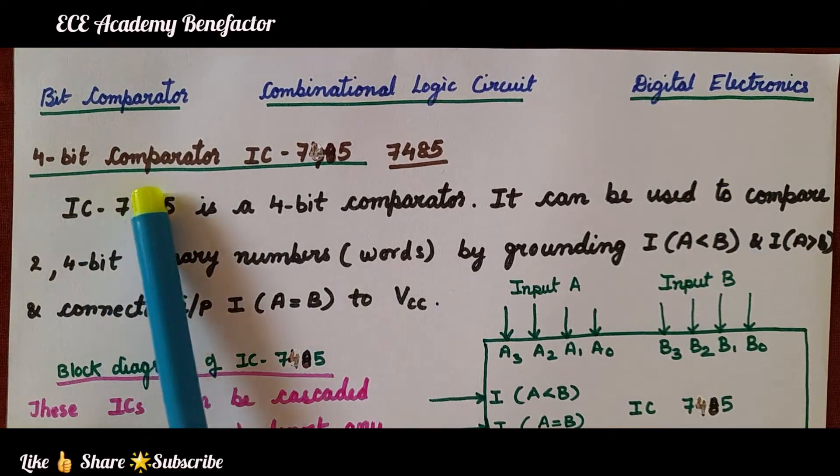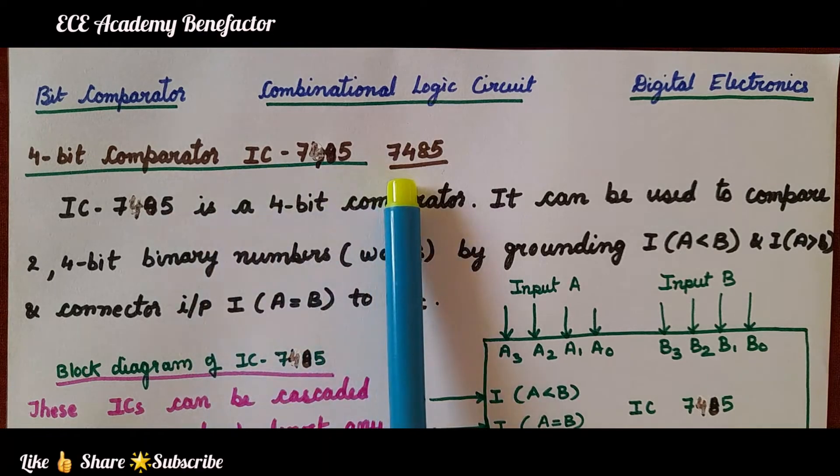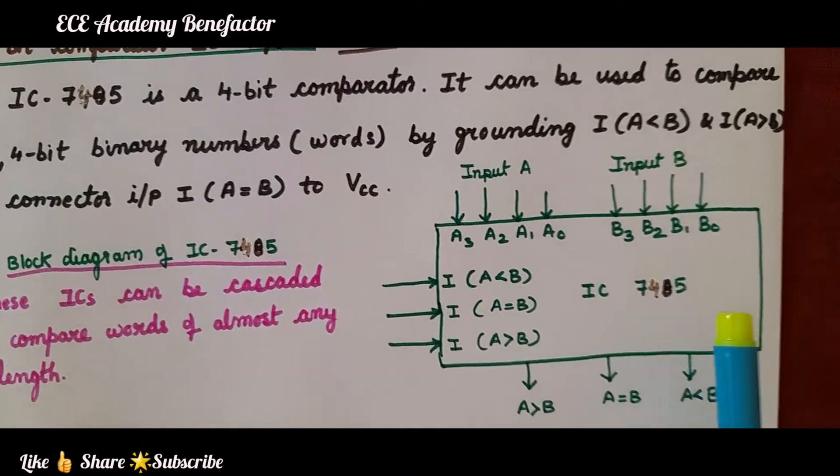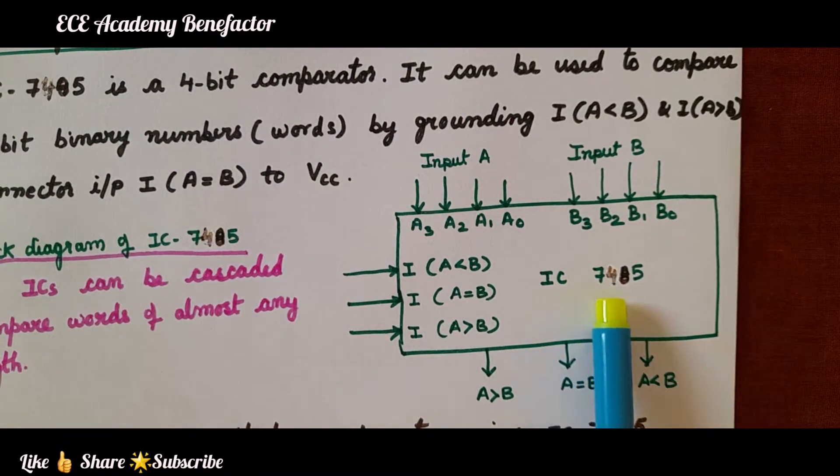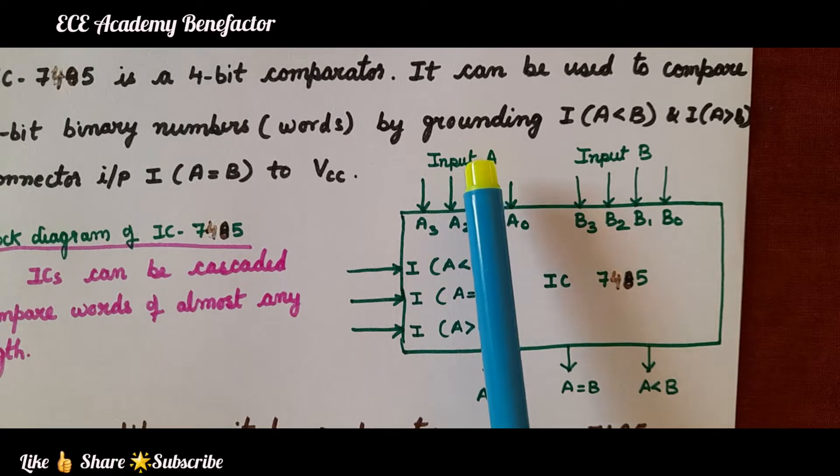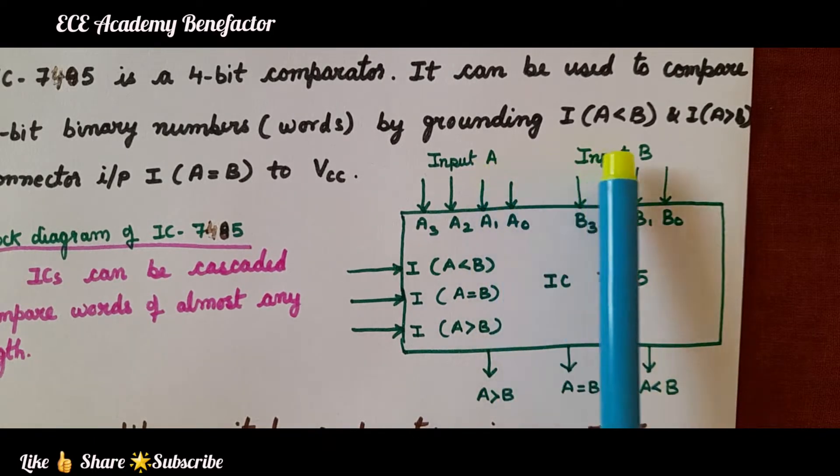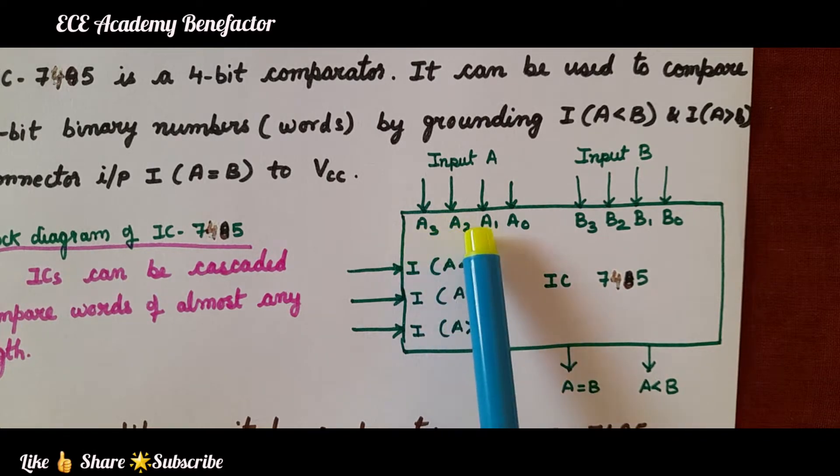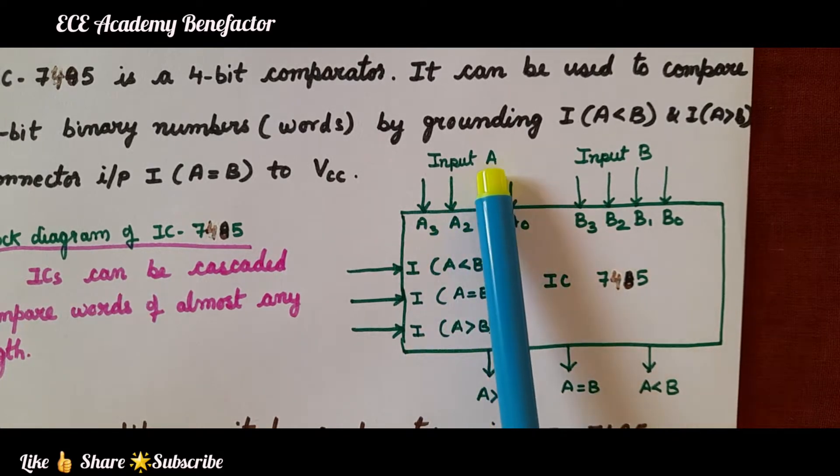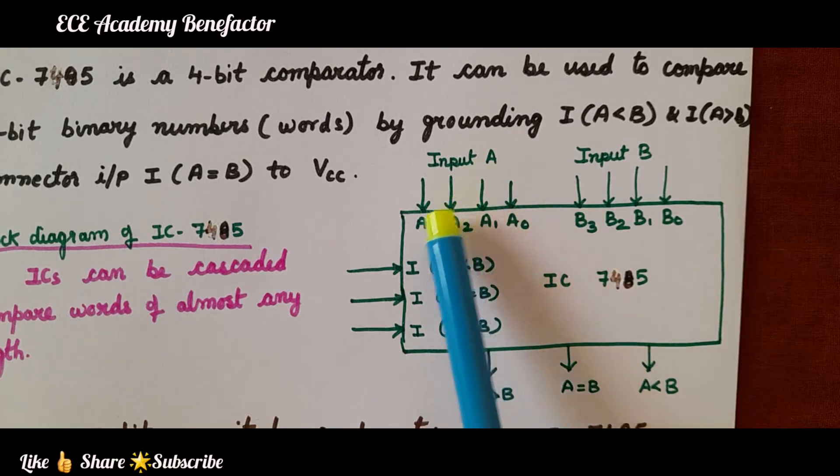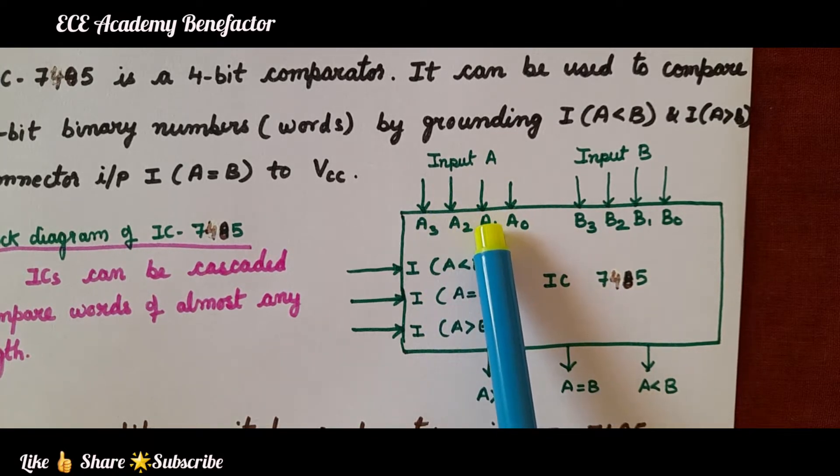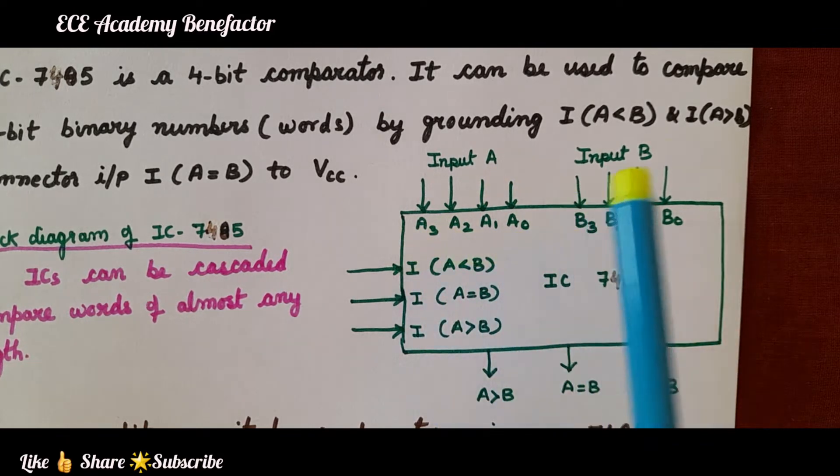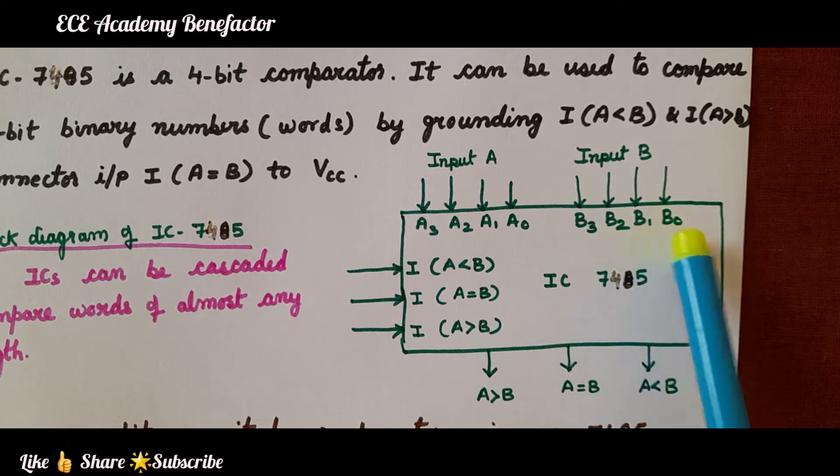The 4-bit comparator IC number is 7485. Its block diagram is given here. The IC7485 will have two inputs: Input A and input B. A and B are two binary numbers having 4-bits. A3, A2, A1, A0 for A binary number. When it is having 4-bits, we say it has a word also. B binary number is having 4-bits: B3 to B0.